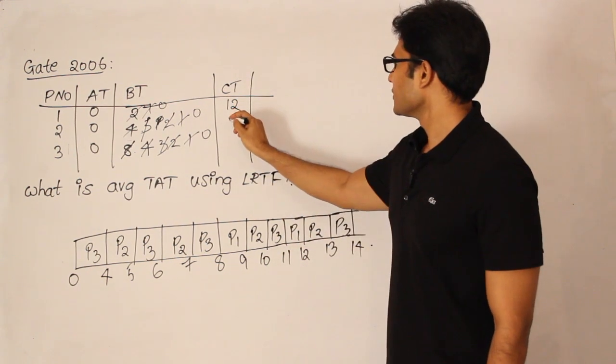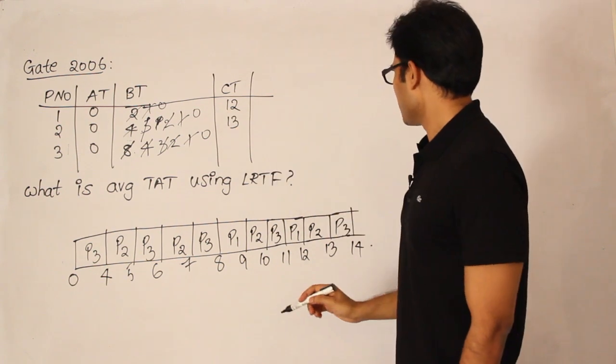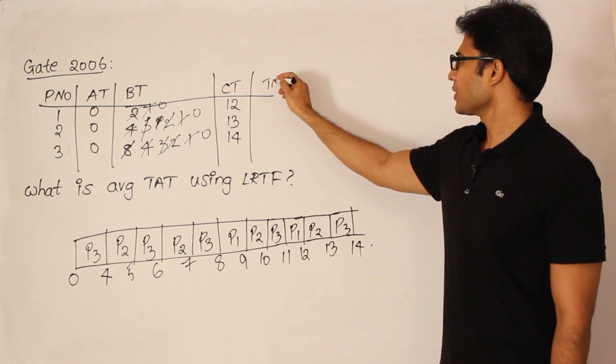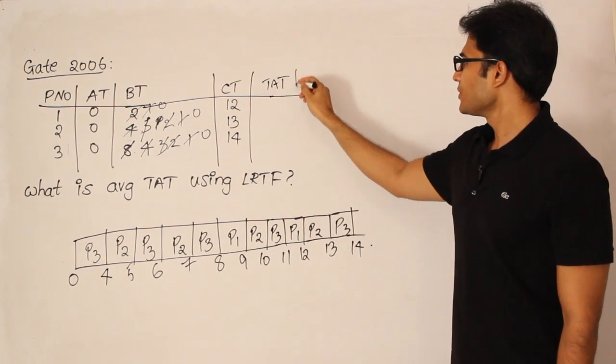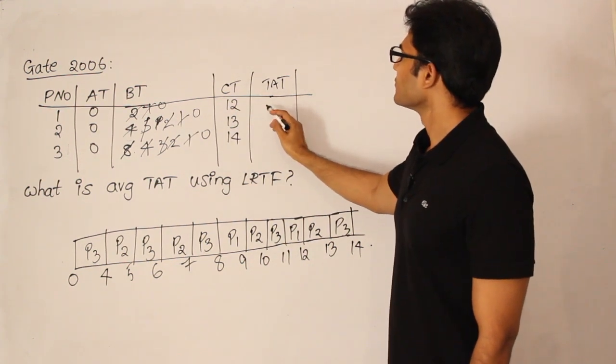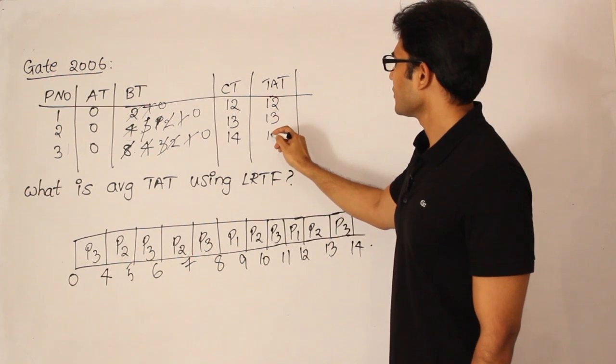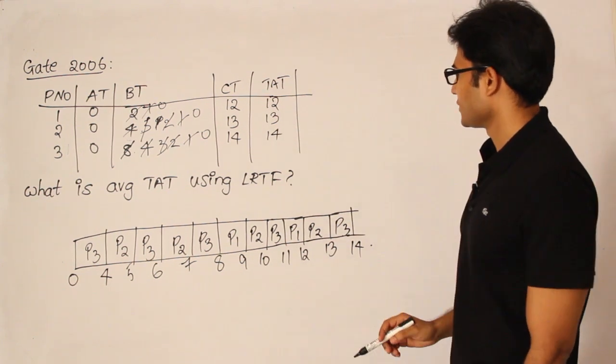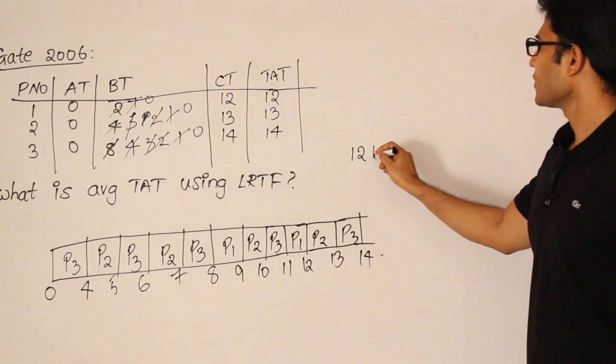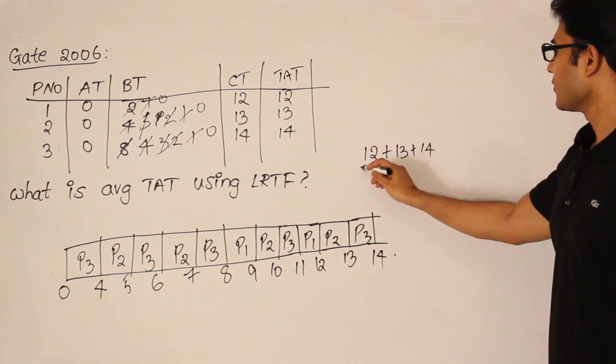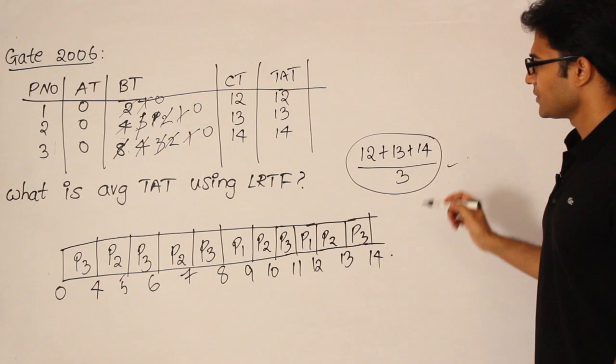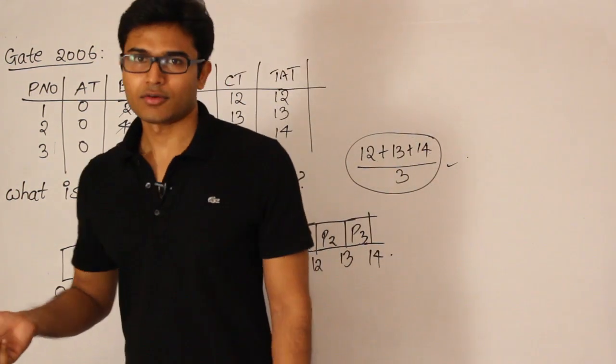P1 completion time is 12, and P2 completion time is 13, and P3 completion time is 14. They are very close. What is turnaround time? Turnaround time is completion time minus arrival time. So here the turnaround time is 12 here, and then 13 here, and then 14 here. What is the average turnaround time? That is what they are asking. Average turnaround time is 12 plus 13 plus 14 divided by 3. You do the math. That is the answer.